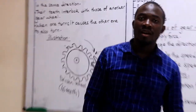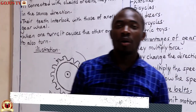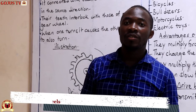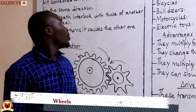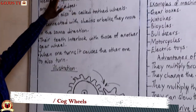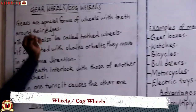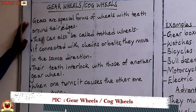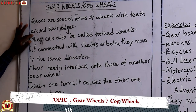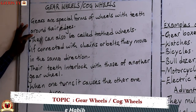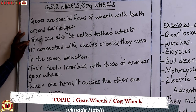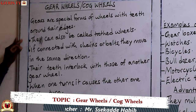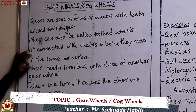Hello candidates, welcome to our very last session about machines. In this one we shall be talking about gear wheels, which can also be called cog wheels. These are special forms of wheels with teeth around their edges, and they can also be called toothed wheels because they have teeth around their edges.